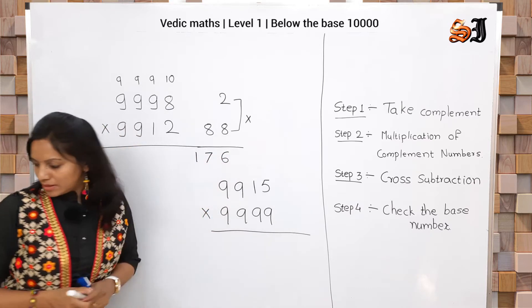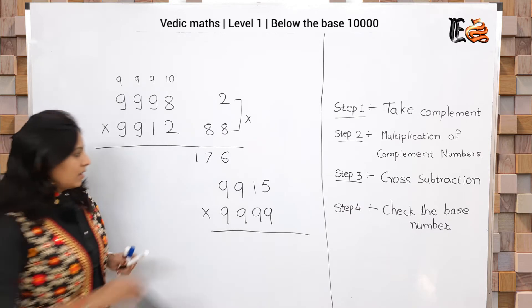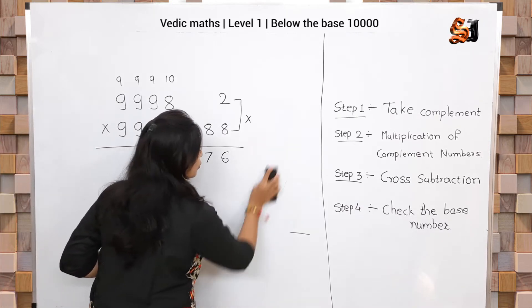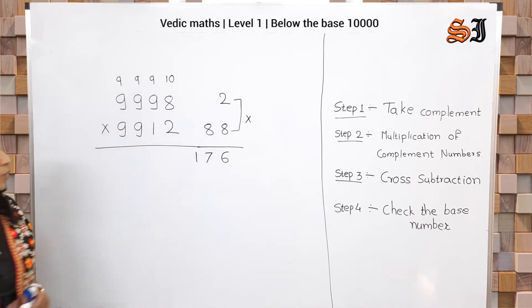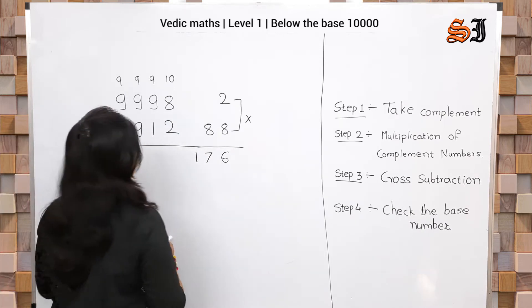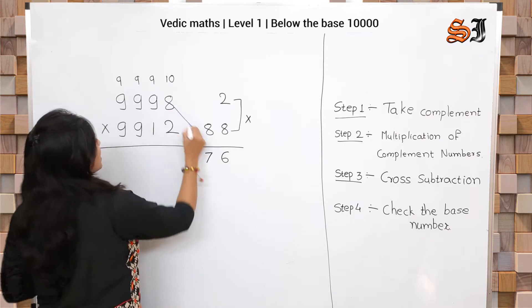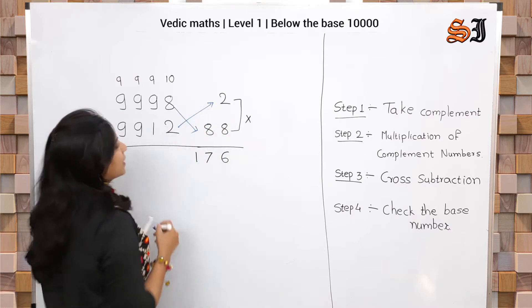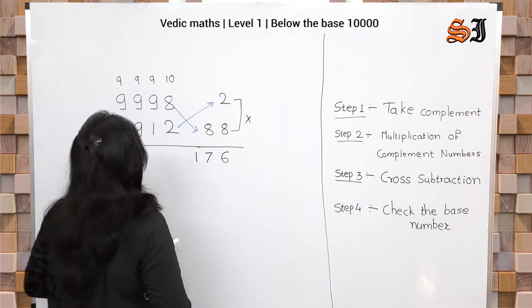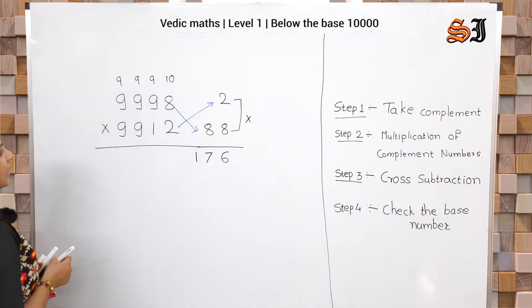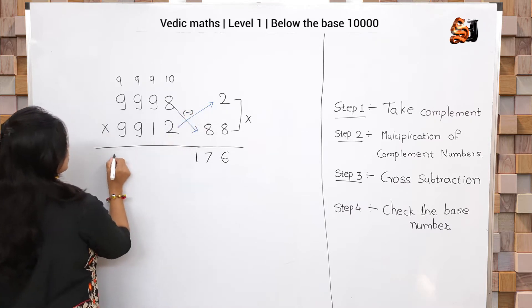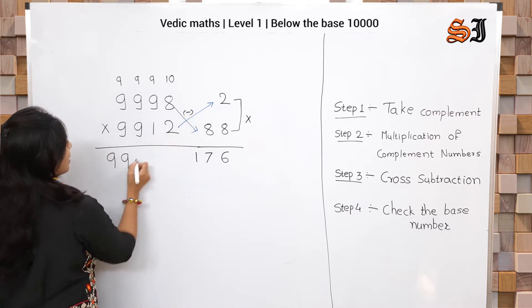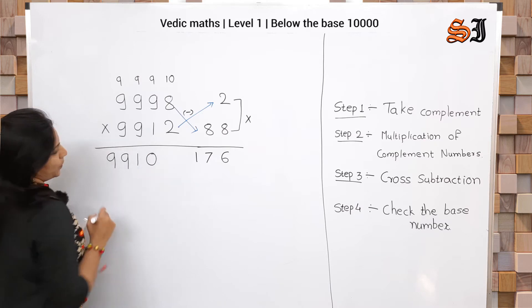Multiplication of complements: 2 × 88 = 176, answer written as 0176. Next step is cross subtraction: 9998 minus 88 and 9912 minus 2 — same result. So the cross subtraction gives 9910.